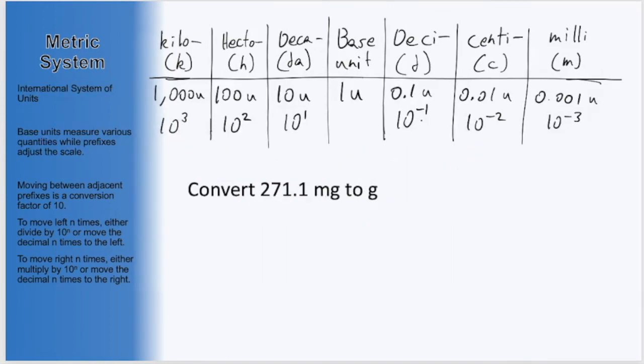And for one last example, to make sure we have it understood, consider converting 271.1 milligrams to grams. So now we're starting over here in the milli prefix, and gram is our base unit, so we want to end up here,